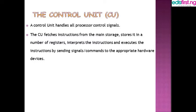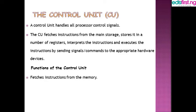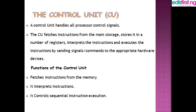The functions of the control unit can be summarized as follows: it fetches instructions from memory — the CPU goes to the RAM or wherever the instruction is coming from — then takes it to the register so that the ALU can pick the instruction from there instead of searching through memory. It interprets the instruction, controls sequential execution of instructions, and sends signals and commands to relevant hardware.